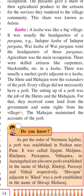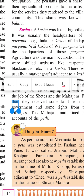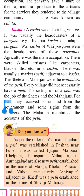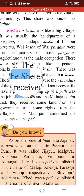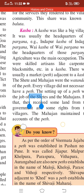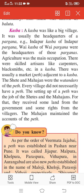The Shethi and Mahajans received some land from the government and certain rights from the villages. The government also gave them rights to maintain the accounts of the path.